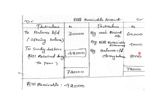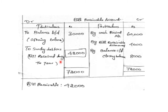Bills receivable dishonoured value is $4,000. By balance carried down — closing balance is $8,000. So $60,000 plus $4,000 plus $8,000 equals $72,000. Therefore bills received during the year is $72,000 minus $30,000 equals $42,000.